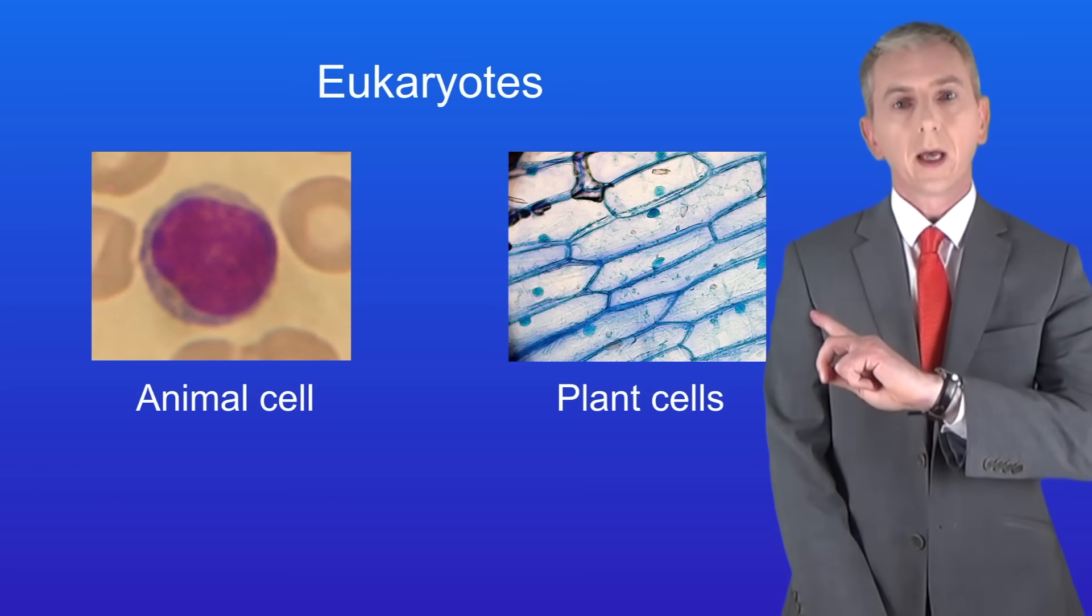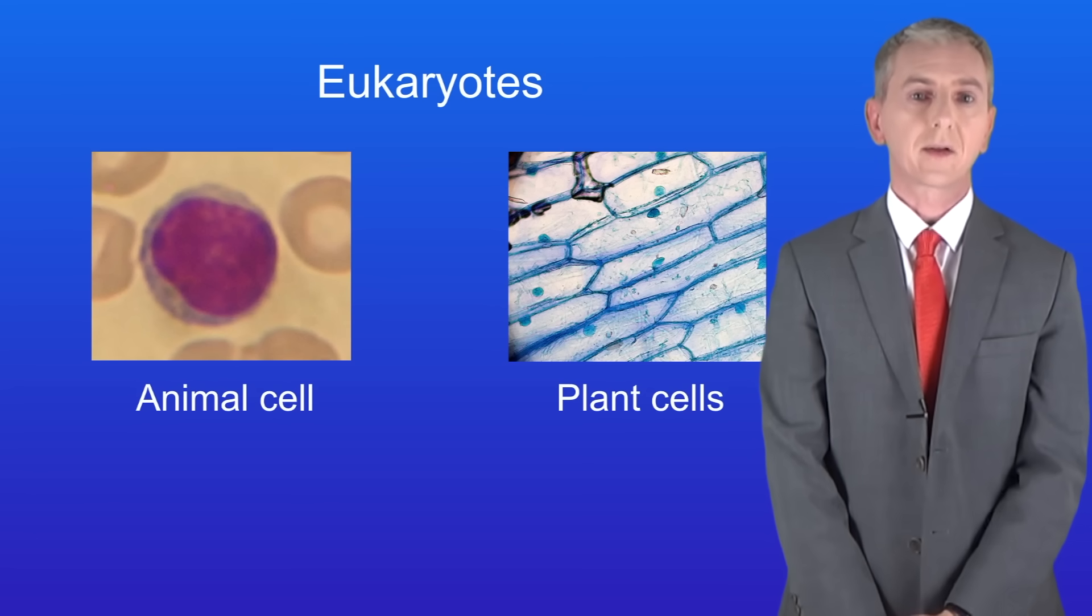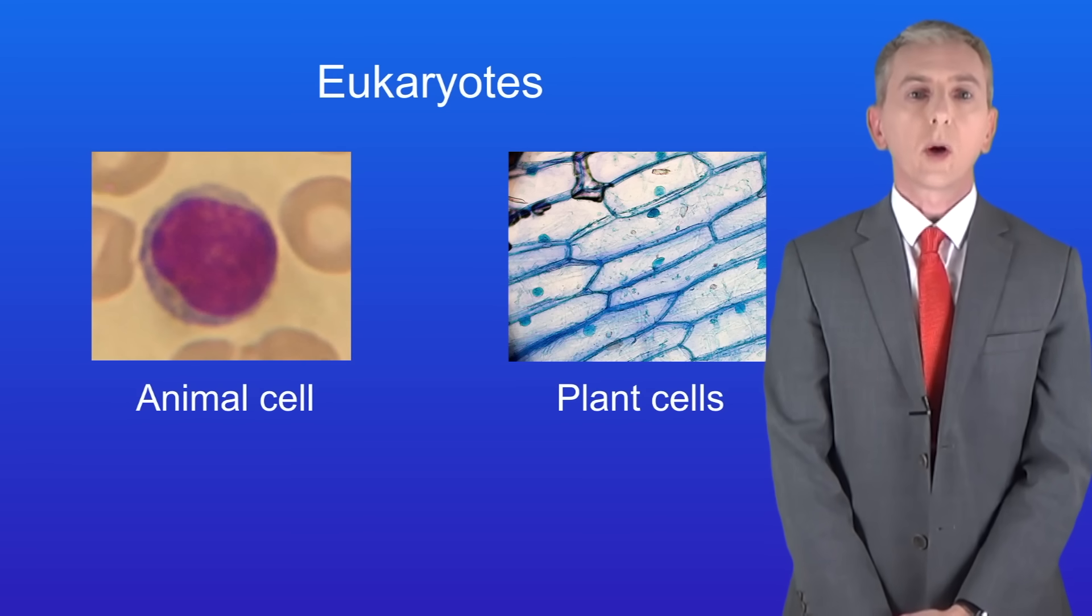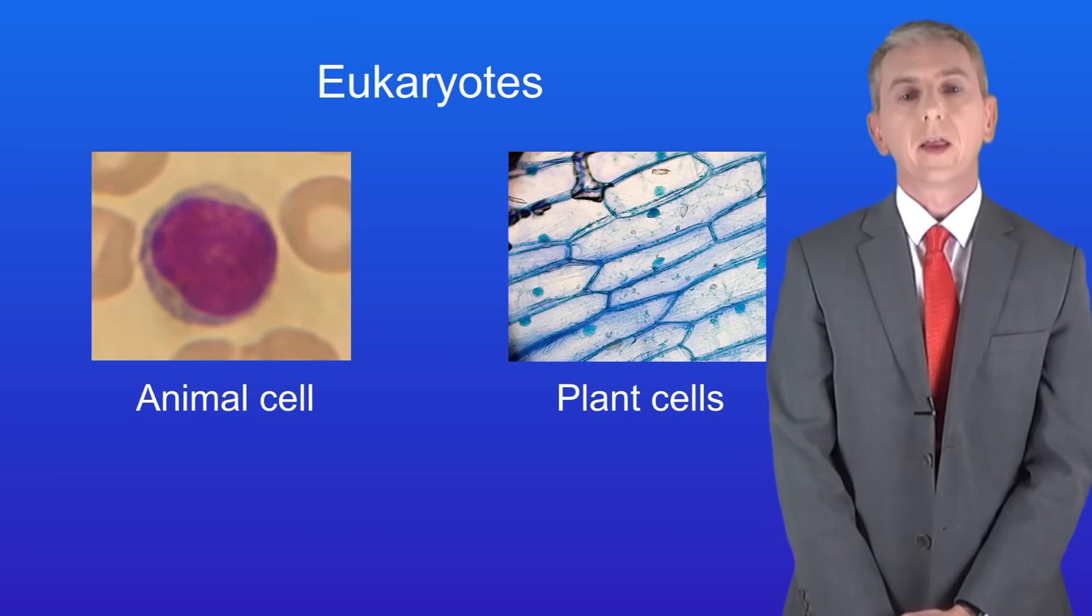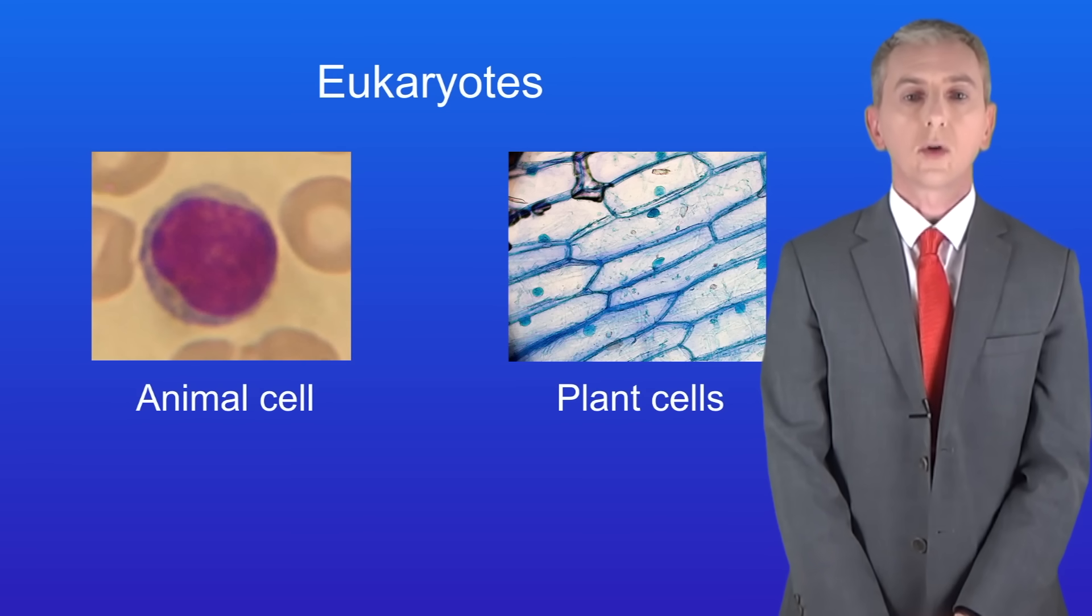I'm showing you here a picture of an animal cell and a plant cell. Both animals and plants are eukaryotes. The most obvious feature of an animal or plant cell is that they've got a nucleus, and I'm showing you that here.